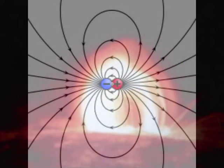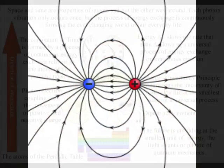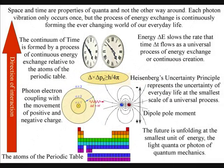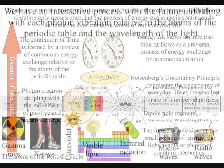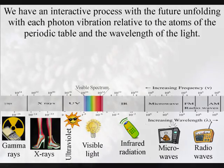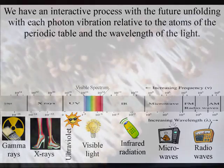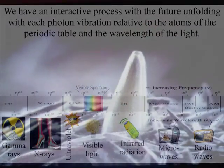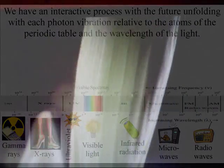This is totally logical if space and time are properties of quanta, with each photon oscillation only occurring once, forming a probabilistic future relative to the atoms of the periodic table and the wavelength of the electromagnetic spectrum. The future is continuously unfolding with the wave-particle duality of light and matter in the form of electrons, forming an interactive process.